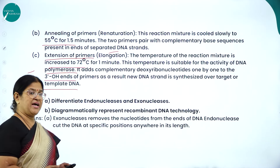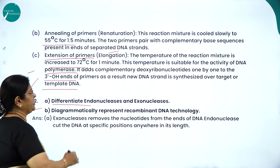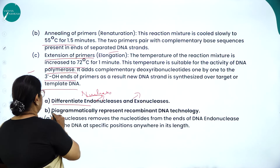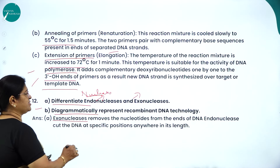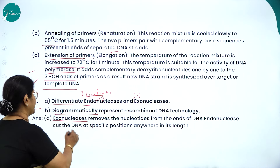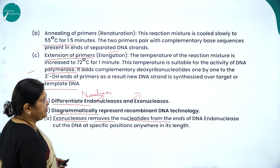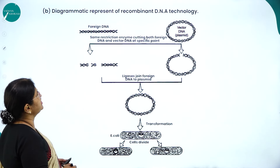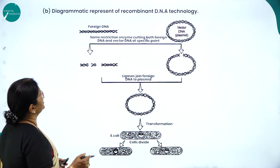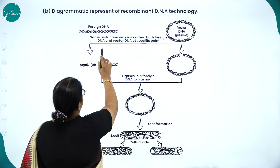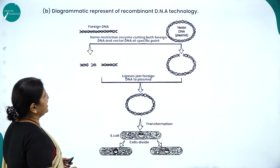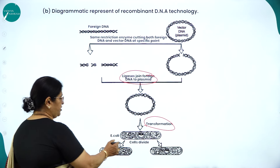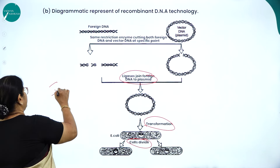Differentiating endonucleases and exonucleases: exonucleases remove nucleotides from the ends of DNA, while endonucleases cut DNA at specific positions anywhere along its length. In the diagrammatic representation of recombinant DNA technology, a vector (DNA plasmid) is introduced; the same restriction enzyme cuts both foreign DNA and vector DNA at specific sites; ligase joins the foreign DNA into the plasmid; and then transformation occurs where cells divide.